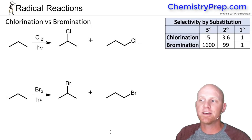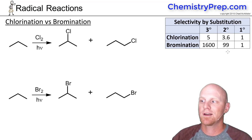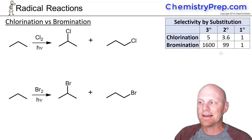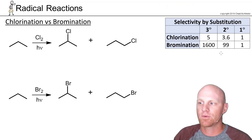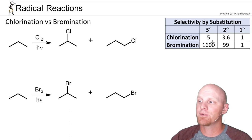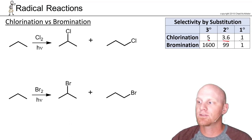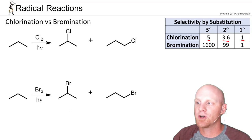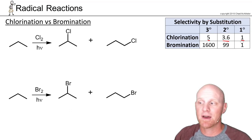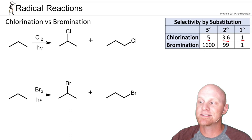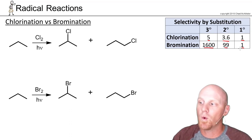We're taking another look at the selectivity of bromination over chlorination. We'll see what's the likelihood of replacing a hydrogen with a chlorine at a tertiary versus secondary versus primary position — it's a 5 to 3.6 to 1 ratio, tertiary to secondary to primary respectively. Notice a much higher ratio for bromination: 1,600 to 99 to 1.